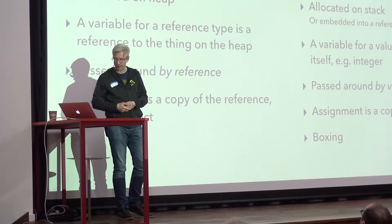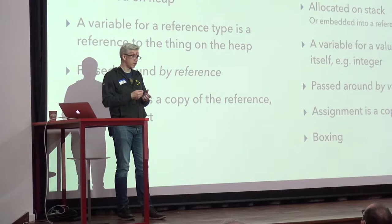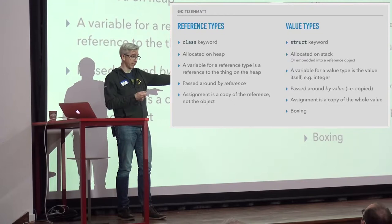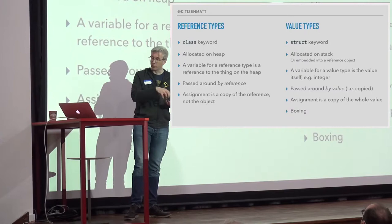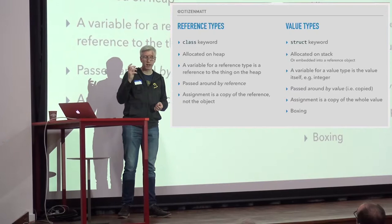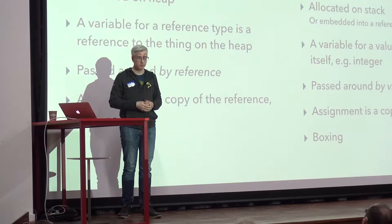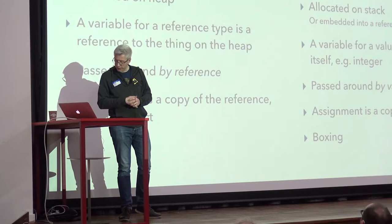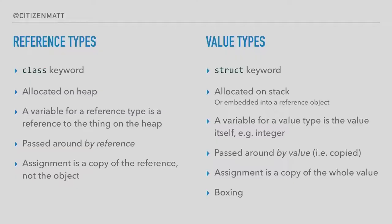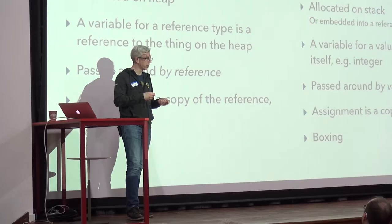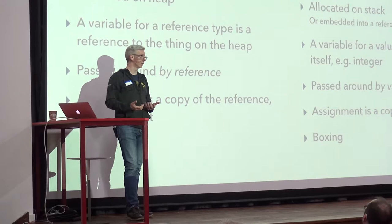References are passed around by reference — the method points to the same heap object, so changes are shared. Whereas a value type is passed by value, meaning it's copied. With an assignment on a reference type you're just copying the reference, so you end up with the same pointer to the same object. Whereas with a value type assignment, even in a method call, you get a new copy. There's also boxing — not applicable here — but that's when you refer to a value type as an object and it gets copied to the heap, which is quite expensive.